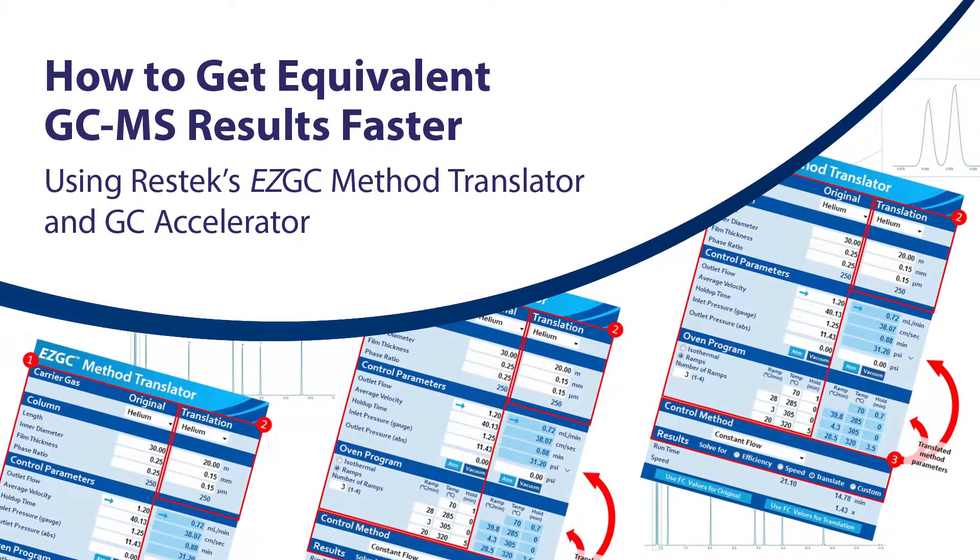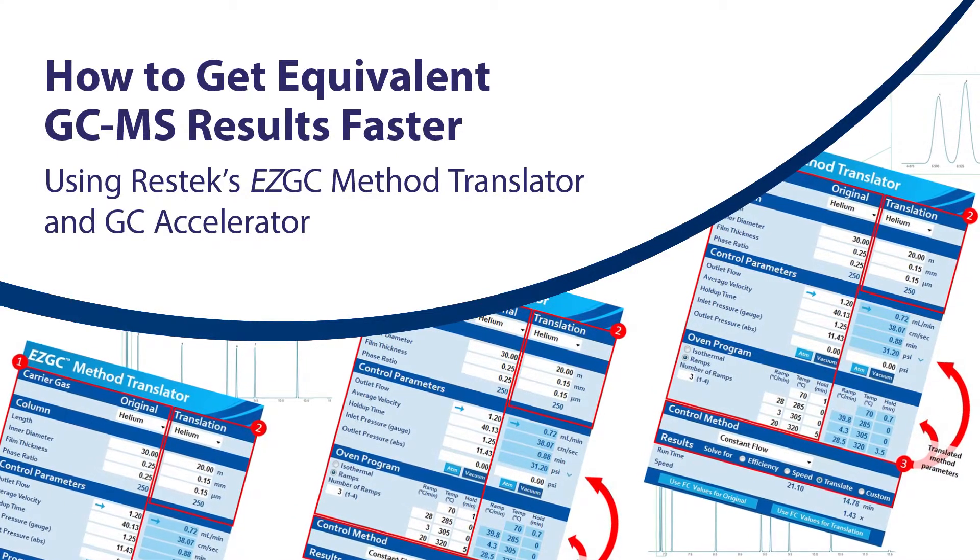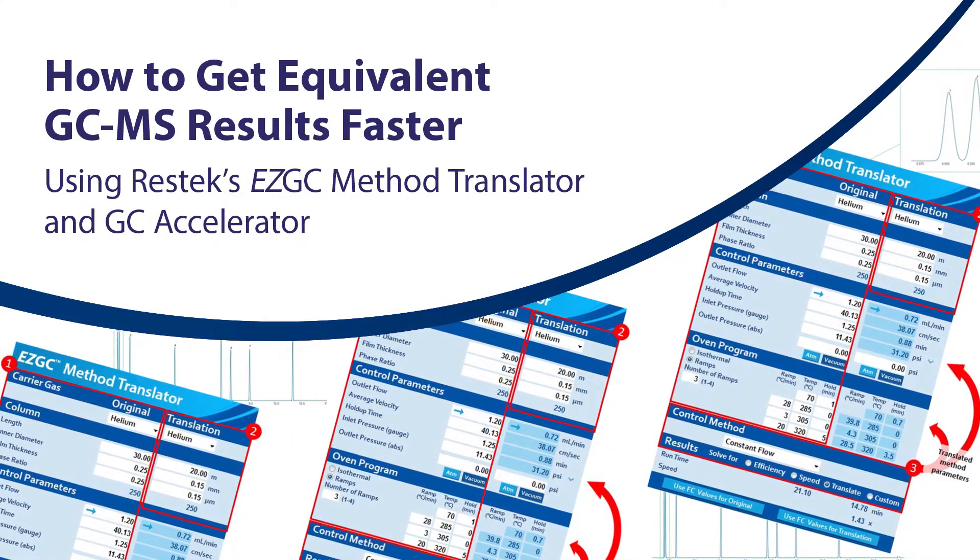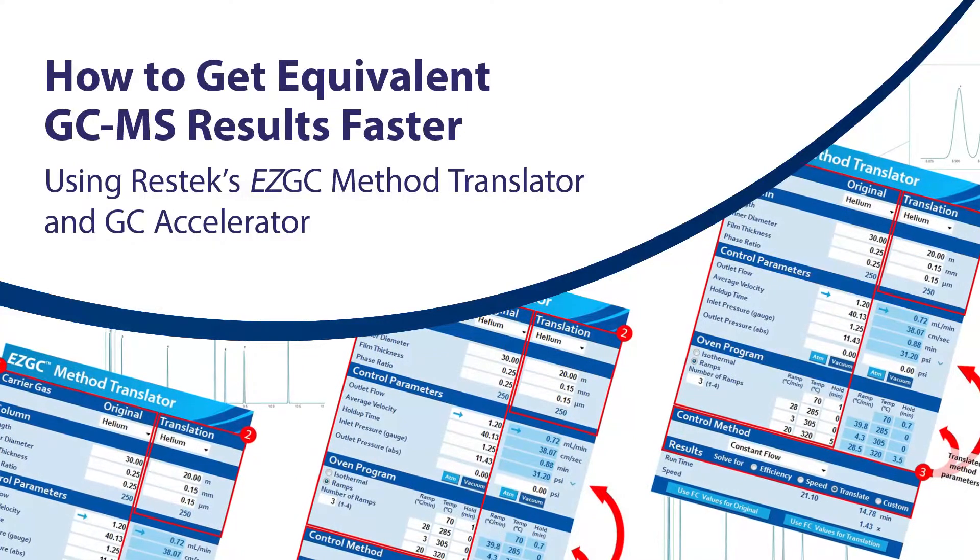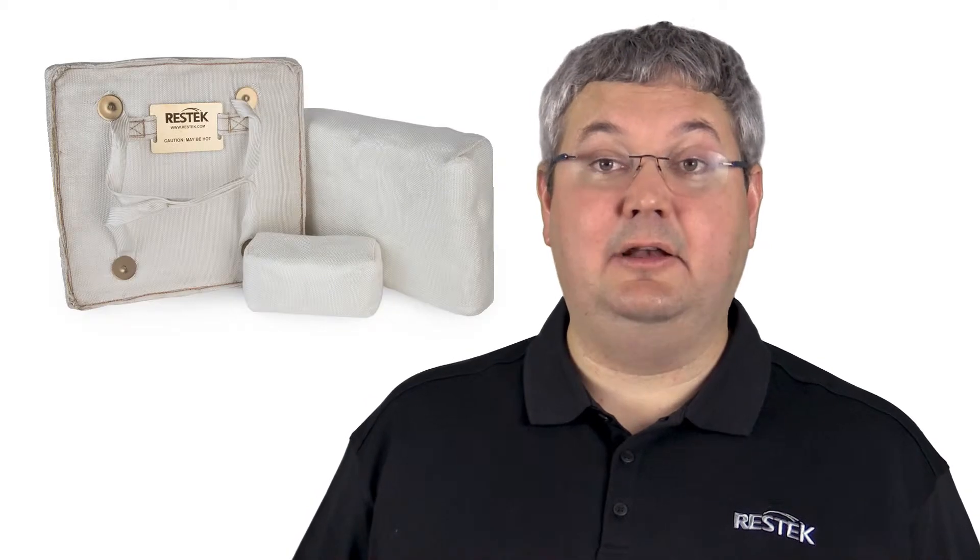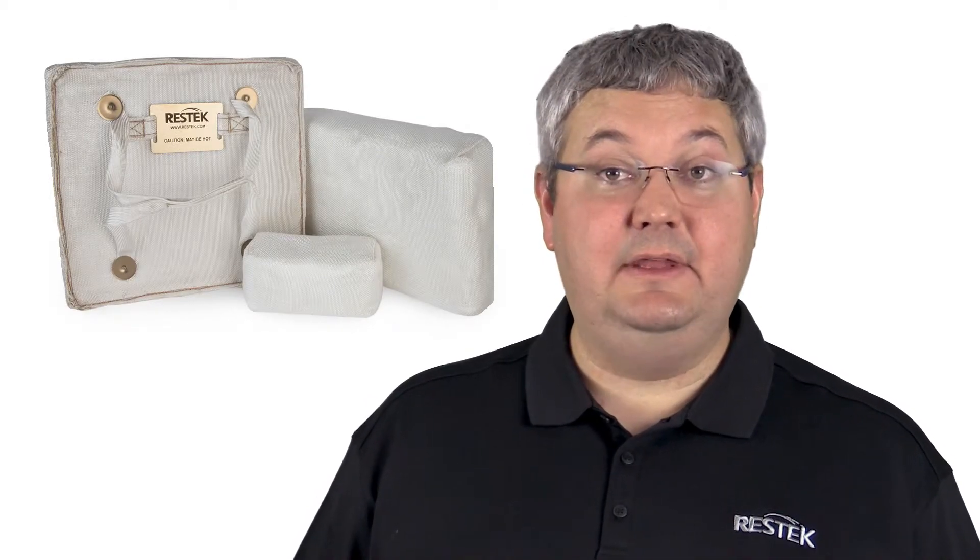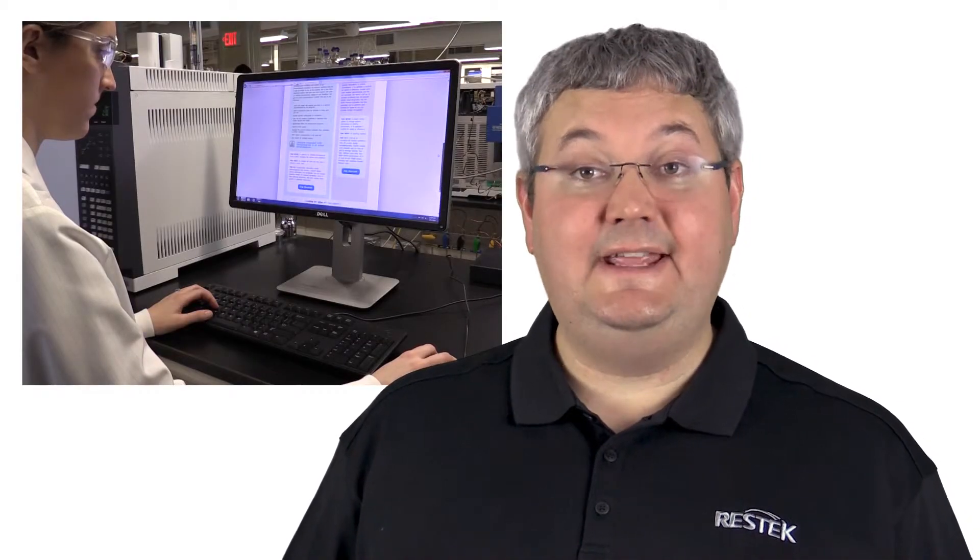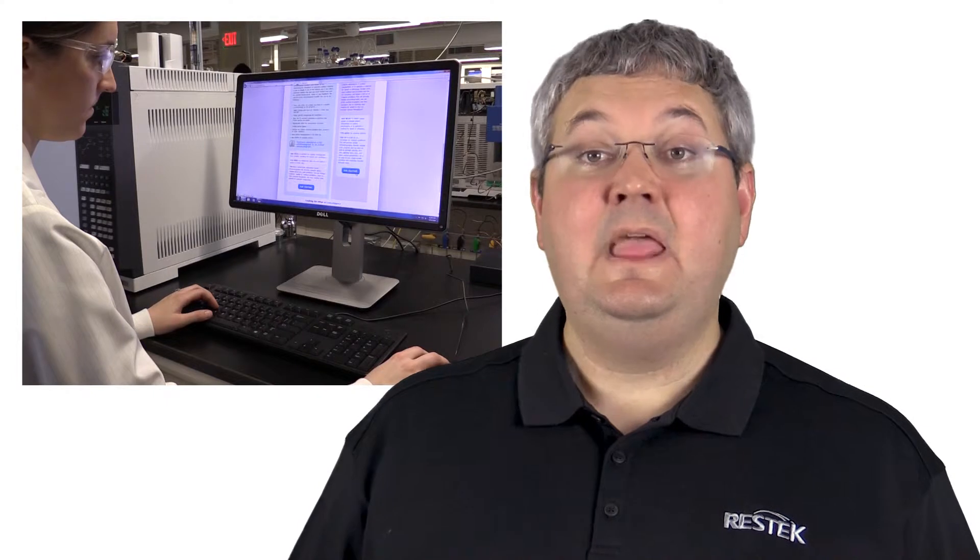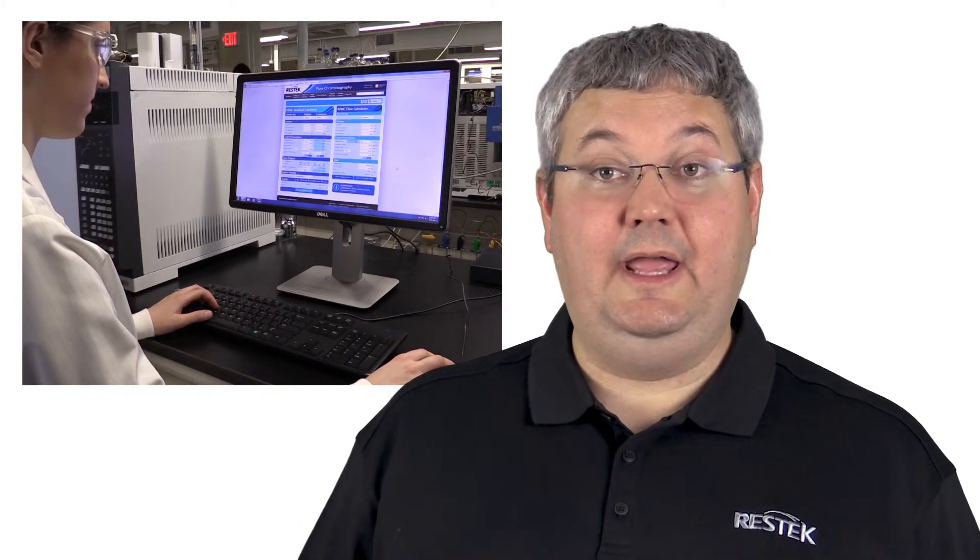How to get equivalent GC-MS results faster using Restek's Easy GC Method Translator and GC Accelerator. In this video, we're going to show you how using the combination of a GC Accelerator insert kit and adapting an existing method to a scaled-down, more efficient column using our Easy GC Method Translator can be a surprisingly simple way to speed up your analyses and get similar results faster.